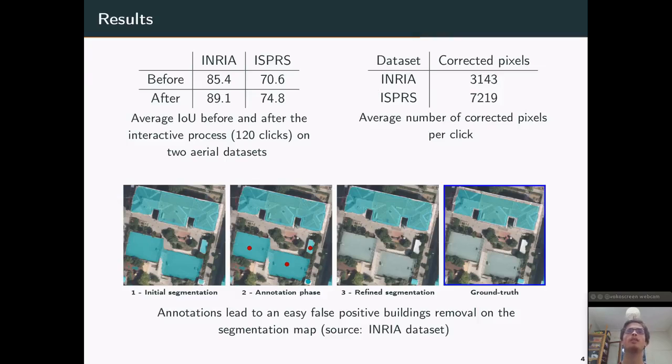Now I present some results of our approach. We evaluated our framework on two datasets: the INRIA dataset and the ISPRS dataset. The INRIA dataset is composed of two classes: buildings and not buildings. And I presented the ISPRS dataset in the demo. We sampled 120 clicks per image to evaluate our framework. And as shown here, we observed an improvement of the IOU of around 5% for both datasets. So this shows that our approach is effective.